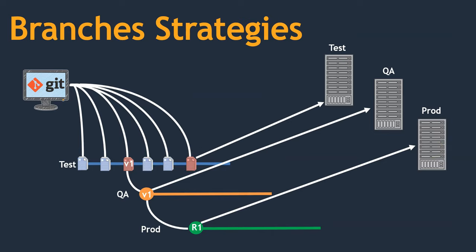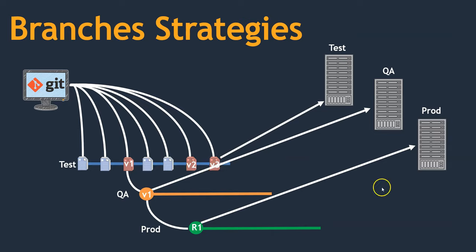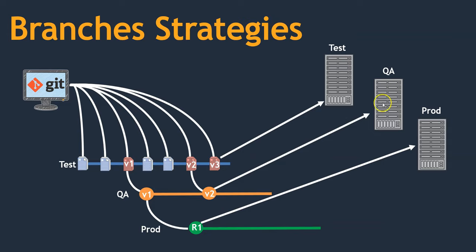The production system is now running with Release 1, which has limited features. Developers continue to enhance the code to come up with new features. Whenever they find that all new features are introduced and working fine, they name it as a new version. They name it V2 and continue to work on releasing new features. So now V2 and V3 exist, but our QA and production systems are still at V1.